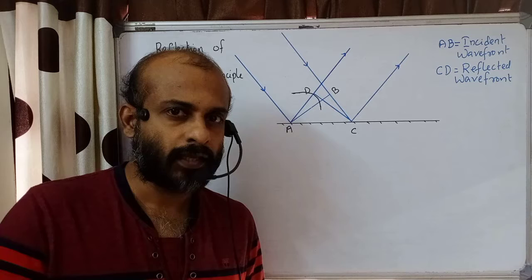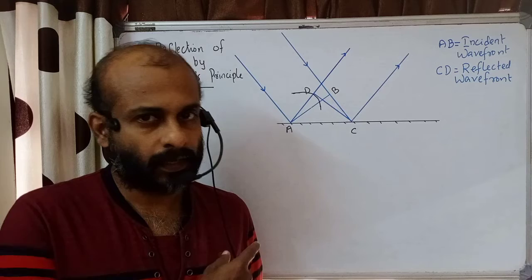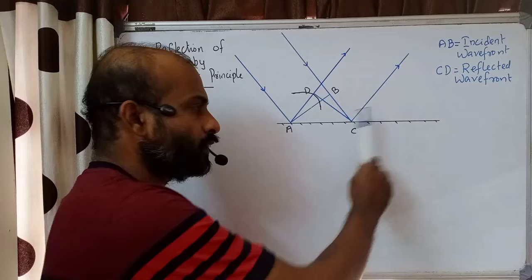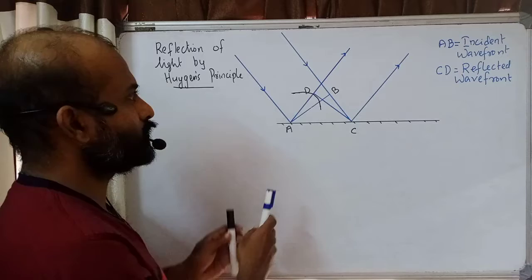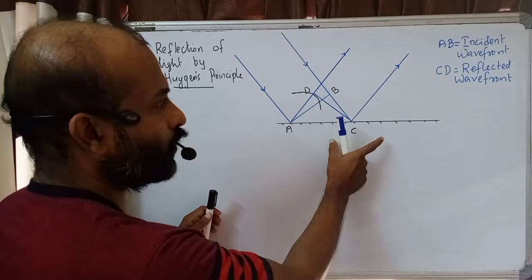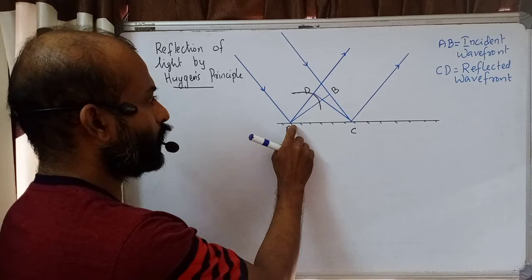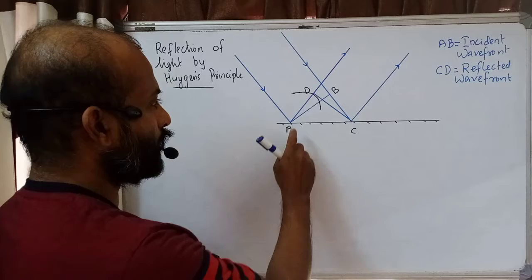Since the wavefronts are propagating, if we want to find the position of the new wavefront after a particular time, we can use Huygens principle. Here we have a shining surface — a mirror, a silvered surface. This is the reflecting side. We have a beam of light with two light rays that fall on this mirror, so these two rays are the incident light rays.